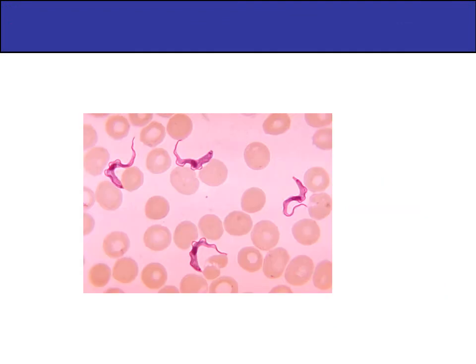Ehrlich discovered many drugs, but only a few actually worked. In 1908, he discovered a drug against Treponema pallidum — the causative agent of syphilis. A blood slide shows red blood cells alongside the microbe Treponema pallidum. Ehrlich discovered a drug that would target this microbe. He searched hundreds of drugs to find one that was a true magic bullet.